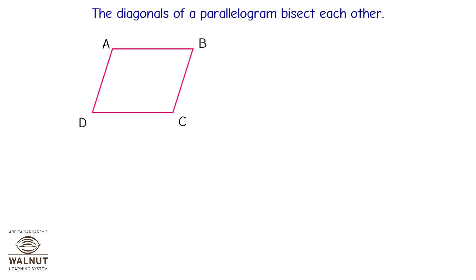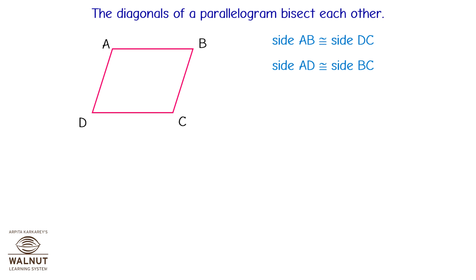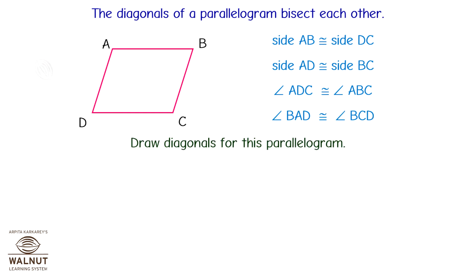Let's now learn about the diagonals of a parallelogram. A parallelogram has two diagonals, and we need to prove they bisect each other. In parallelogram ABCD, opposite sides are congruent: AB is congruent to DC and AD is congruent to BC. Also, opposite angles are equal: angle ADC equals angle ABC, and angle BAD equals angle BCD.